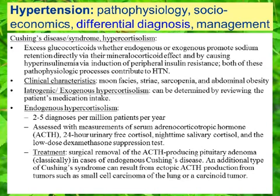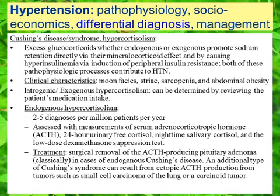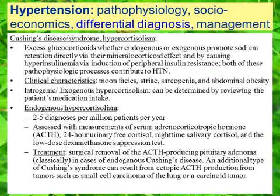Treatment for endogenous hypercortisolism can include surgical removal of any ACTH-producing pituitary adenomas in the classic scenario of Cushing disease. An additional type of Cushing syndrome can result from ectopic ACTH production from tumors, such as small cell carcinoid of the lung or a carcinoid tumor.